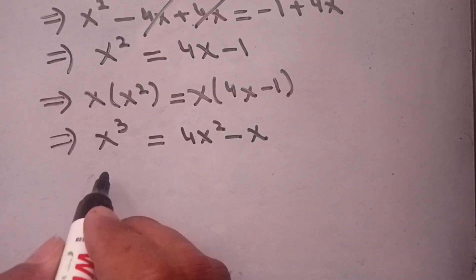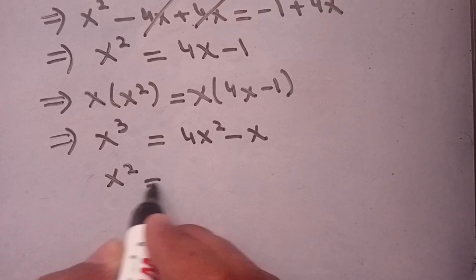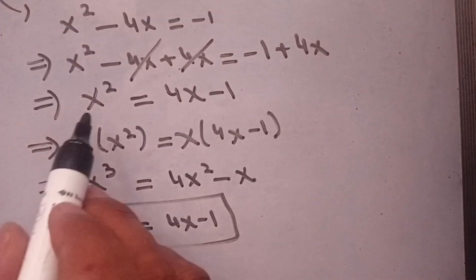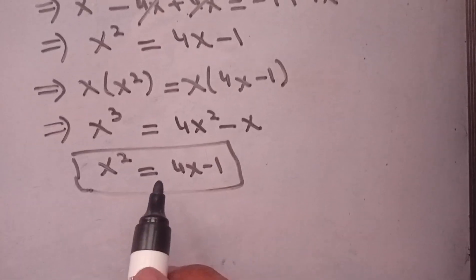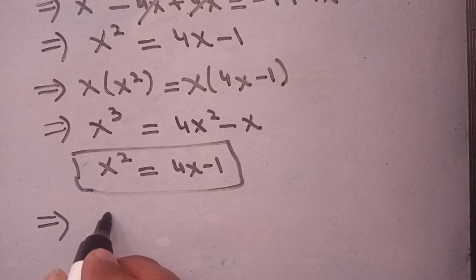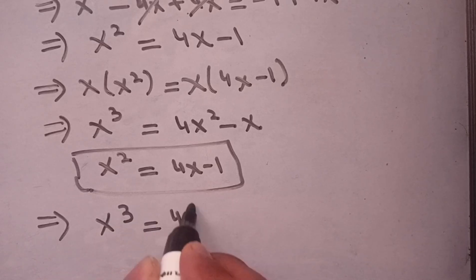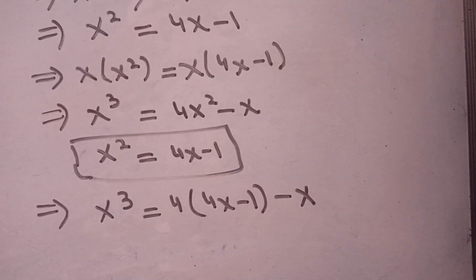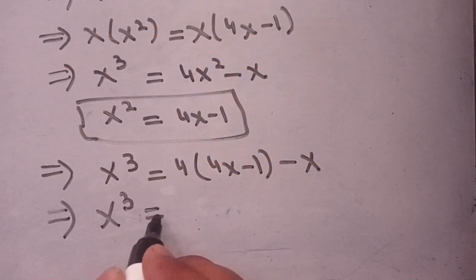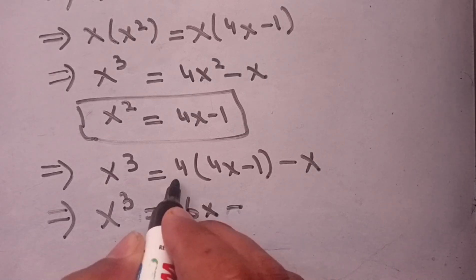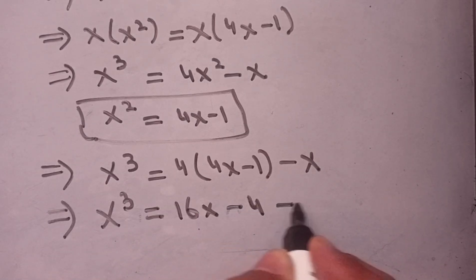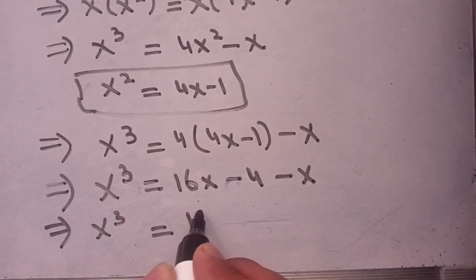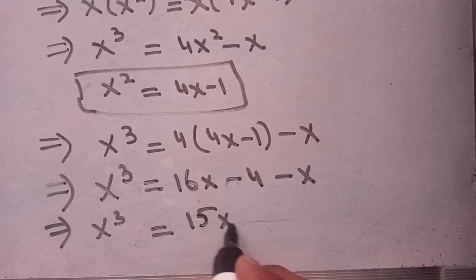We are given that x squared equals 4x minus 1. In place of x squared we substitute its value: x cubed equals 4 times (4x minus 1) minus x, which implies x cubed equals 16x minus 4 minus x, giving x cubed equals 15x minus 4.